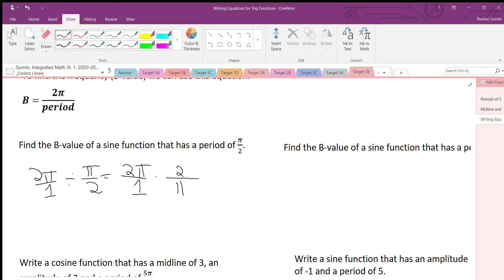Okay, beautiful. Now, let's see if we can reduce anything. I actually see a single thing that I can reduce, and that is the pi. So we're left with 2 times 2. The B value is 4. Not too bad.